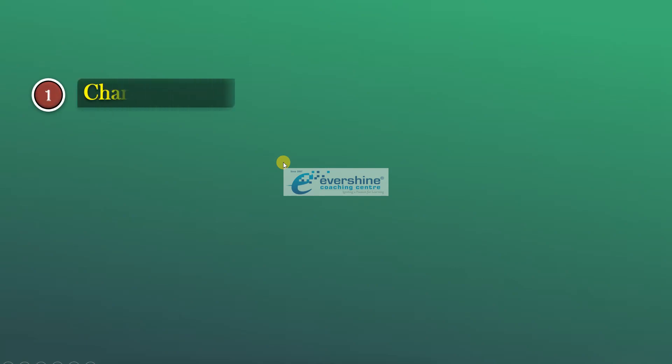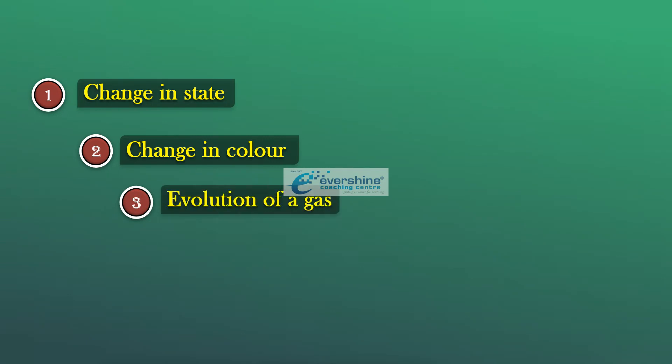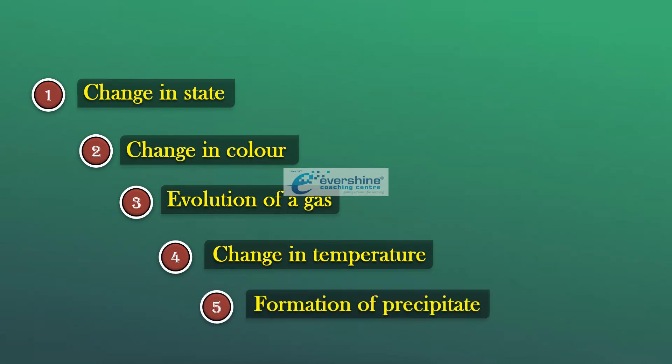That is, if there is a change in state, either it is changing with solid to liquid or liquid to gas or gas to liquid or liquid to solid, any of these possibilities. If there is a change in state, change in color, evolution of gas, change in temperature, and formation of precipitate. In either of these following cases, if any case satisfies, we can say that there is a chemical reaction has taken place. I hope you can understand.